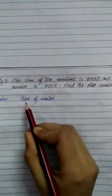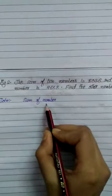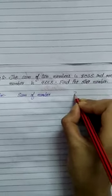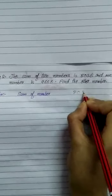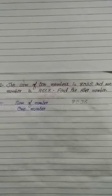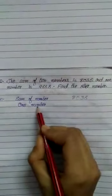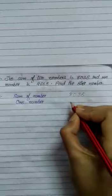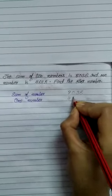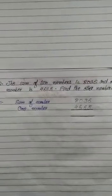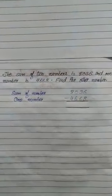Write the first statement: sum of numbers — what is the sum? 8,036. Second statement: one number — what is the one number? 4,668. Now subtract to find the other number.